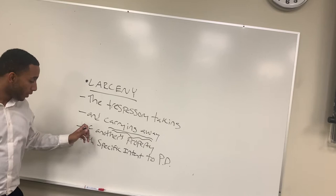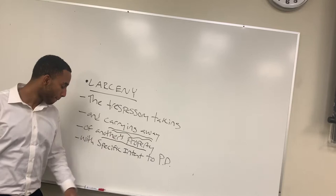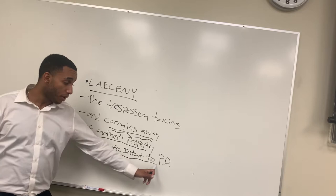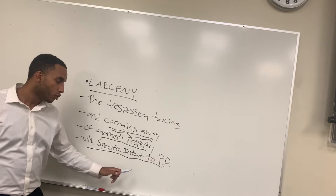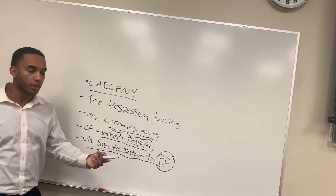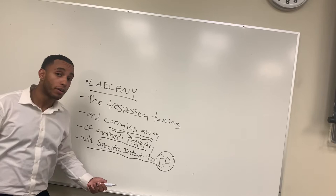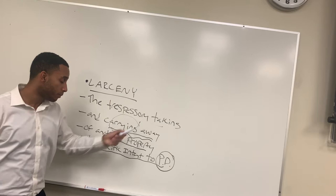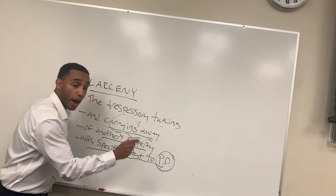The third element, property of another — self-explanatory, it's the store's property. Lastly, with the specific intent to permanently deprive, the defendant actually had the intent within their mind to permanently deprive the store of that item. The example I just gave is attempted larceny. However, if the person really gets away with it and actually takes the item from the store — the trespassory taking, the carrying away, belonging to the store, and permanently depriving the store — that is an example of a completed larceny.